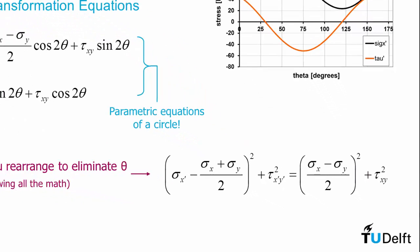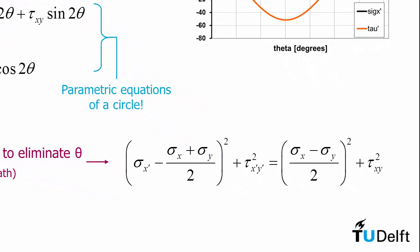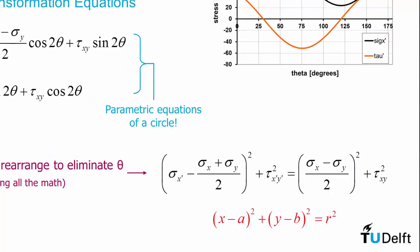If we rearrange to eliminate theta, we get the following equation where we can start to see that sigma x prime and tau x prime y prime are kind of like the x and y coordinates of a circle. If I overlay the general equation for a circle below, we see that relationship.